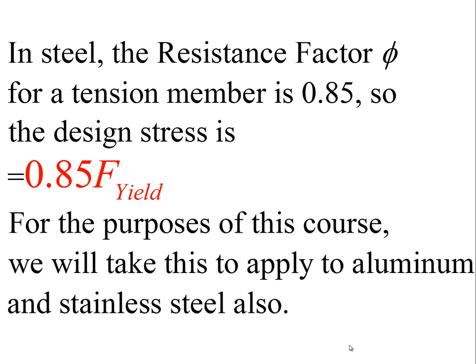This was a pretty conservative number at its time. It has been hotly debated, and in more recent versions of the Manual of Steel Construction this number has been put at 0.90. However, to avoid confusion we're going to remain consistent with the textbook and previous versions of the Steel Manual, with the understanding that the 0.85 factor is on the conservative side. For the purposes of this course, we're also going to take the φ factor for aluminum and stainless steel to be 0.85 — so for every one of these materials we will multiply the yield stress by 0.85 to arrive at our design stress.